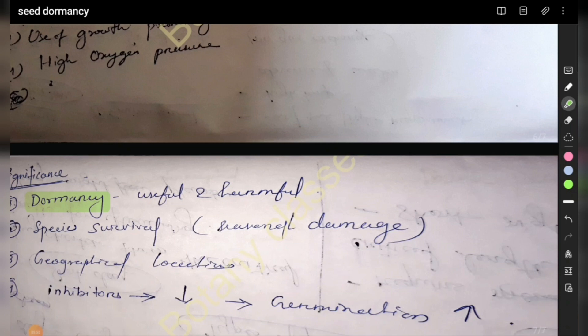When water is not available, seeds don't germinate and are preserved. In these conditions, dormancy will be useful for seed preservation.